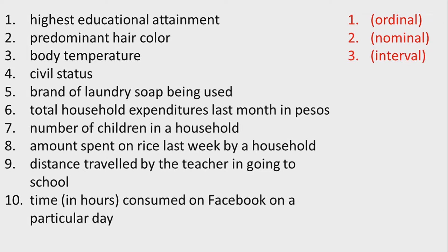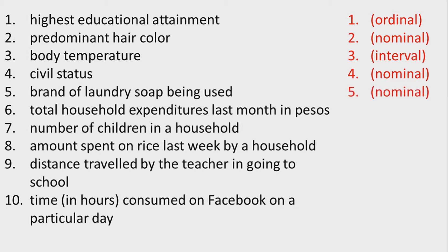Number three: body temperature. You may be wondering why body temperature is interval and not ratio. Remember, ratio has an absolute zero. Temperature does not have an absolute zero because if you measure temperature in degrees Fahrenheit or Celsius, it is considered interval data — the zero points are arbitrary, and there can be temperatures below zero. However, if you measure temperature in degrees Kelvin, it is considered ratio because the zero point is absolute. Since we measure body temperature usually in degrees Celsius, it is interval.